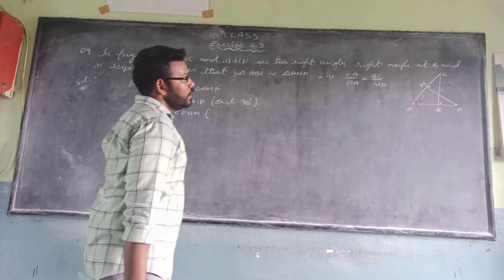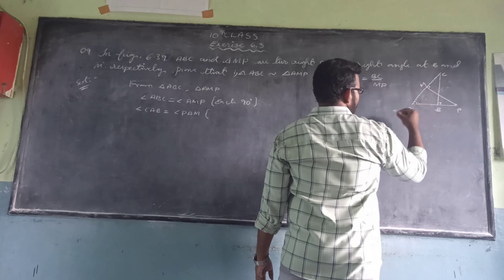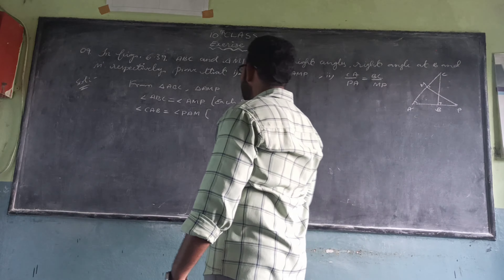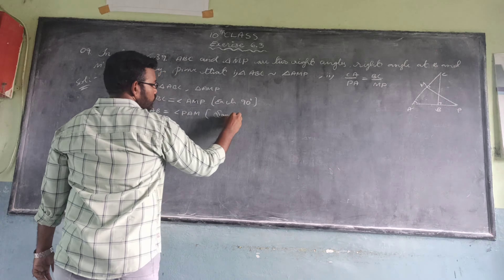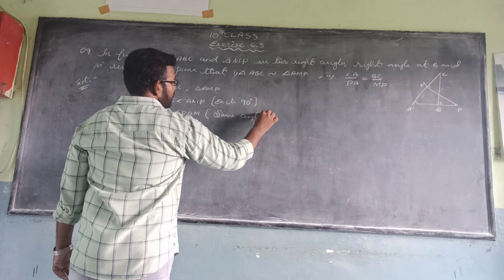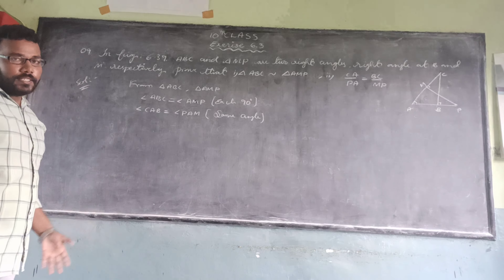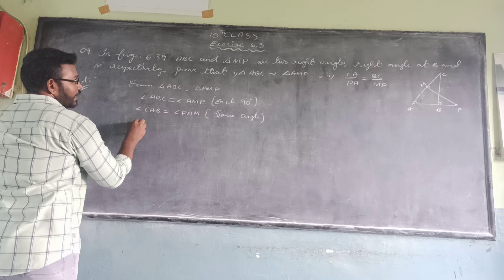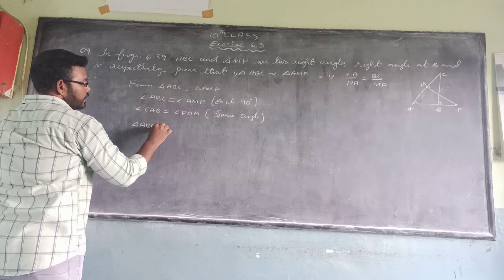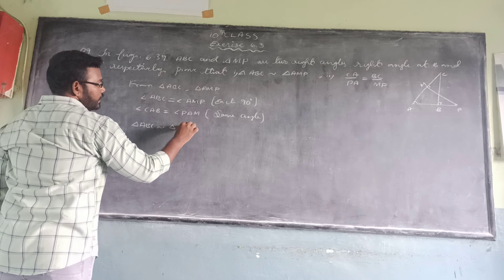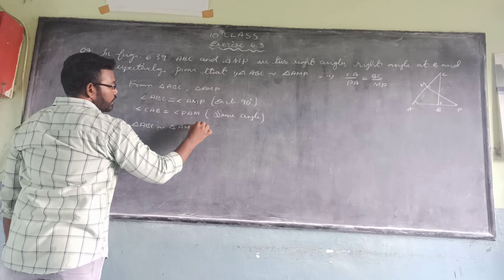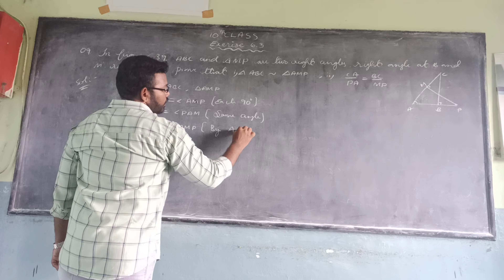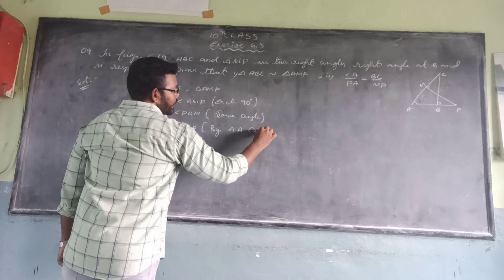To prove it, from triangles ABC and triangle AMP: angle ABC is equal to angle AMP because each angle is 90 degrees. Also, angle CAB is equal to angle PAM — this is the same angle in both triangles. By using the AA criterion, triangle ABC is similar to triangle AMP.